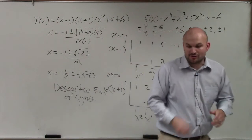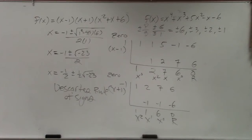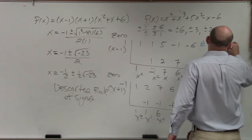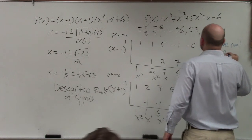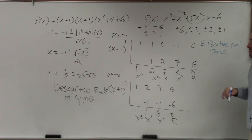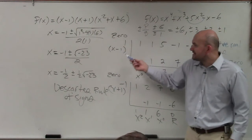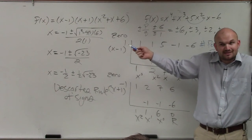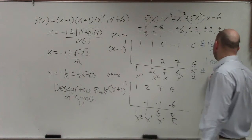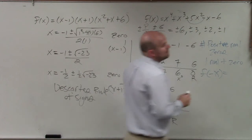Write down Descartes' rule of signs, because you'll need to look it up — I have videos online. Descartes' rule of signs says the number of positive real zeros equals the number of sign changes of your polynomial. How many sign changes do we have? Just one. So there's only one real positive zero, and that's true in this example.